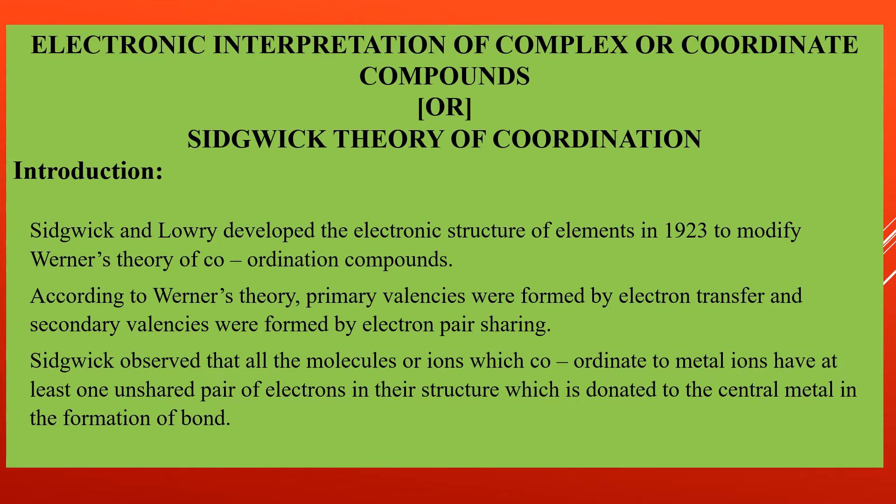In Werner's theory we learned that metal atoms possess two types of valences. Do you remember what those two types are? Primary valences and secondary valences. Primary valences are formed by the transfer of electrons, and secondary valences are formed by sharing of an electron pair.